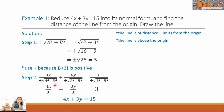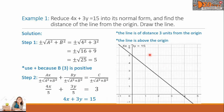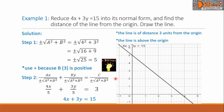We can simplify this line by multiplying by 5, which gives 4x plus 3y equals 15. Let us draw this line using GeoGebra. This is the line 4x plus 3y equals 15, and this is the origin. We can see that the line is 3 units above the origin. This is our final answer.